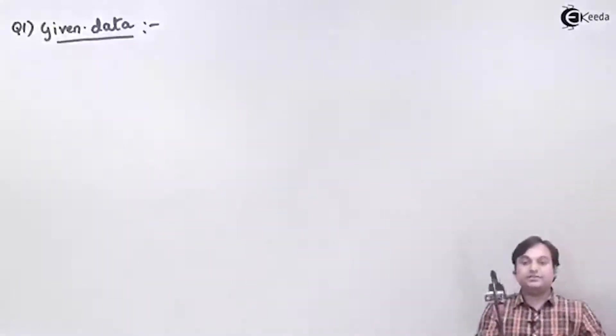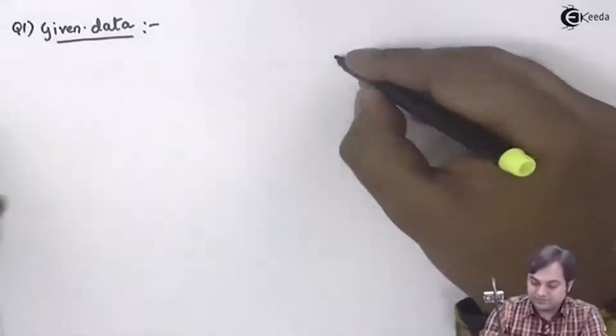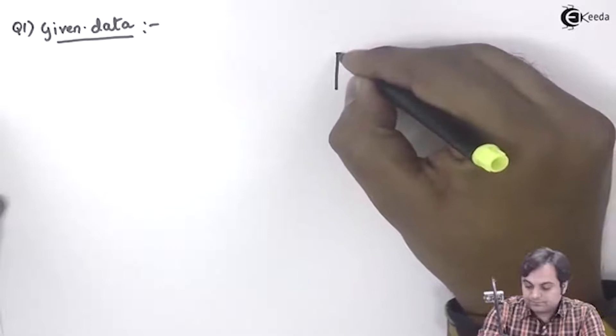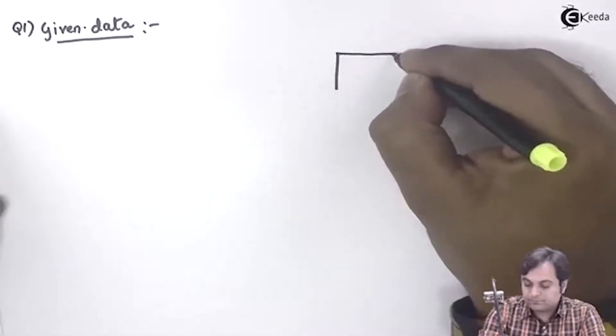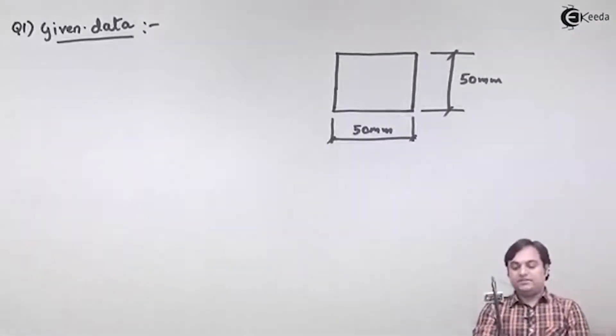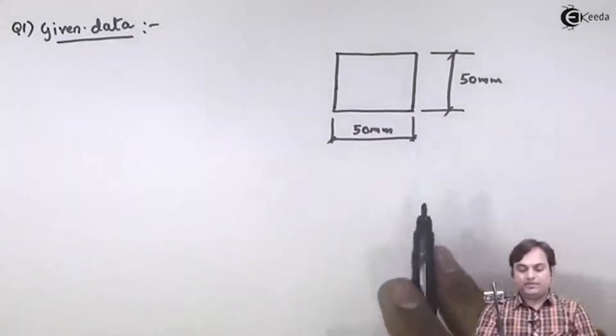And 3 meter is the length, so I'll draw the cross section first. Here the cross section is a square as we can see, 50 mm into 50 mm.